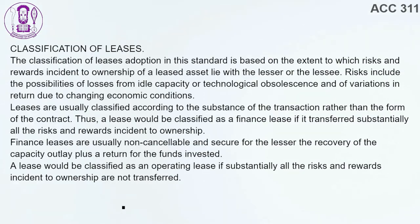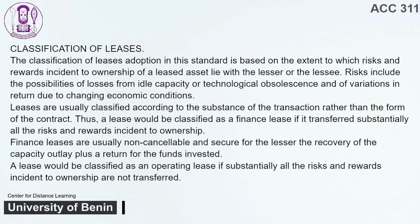Classification of Leases. The classification of leases adopted in this standard is based on the extent to which risks and rewards incident to ownership of a leased asset lie with the lessor or the lessee. Risks include the possibility of losses from idle capacity or technological obsolescence and variations in return due to changing economic conditions. Leases are usually classified according to the substance of the transaction rather than the form of the contract. A lease would be classified as a finance lease if it transferred substantially all the risks and rewards incident to ownership. A lease would be classified as an operating lease if substantially all the risks and rewards incident to ownership are not transferred.